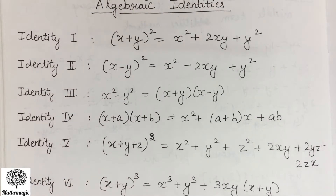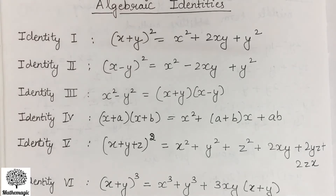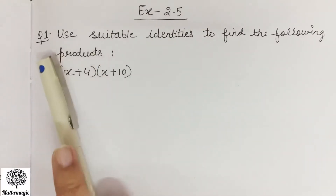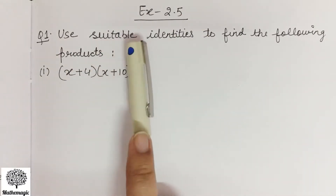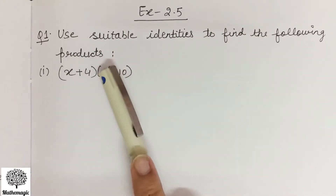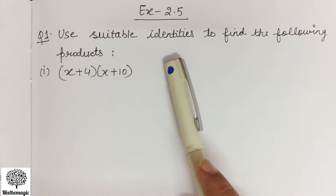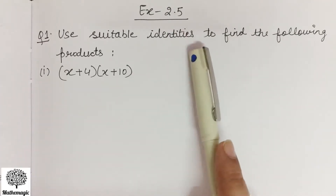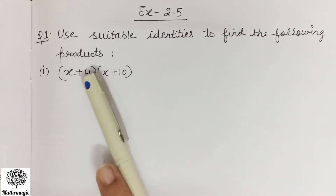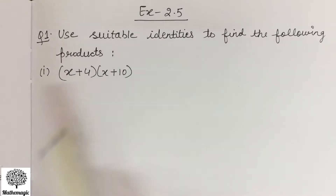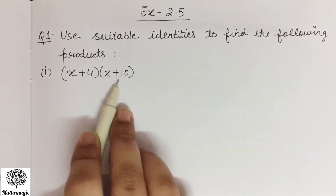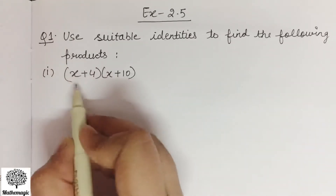Now I will start with Exercise 2.5, Question number 1: Use suitable identities to find the following products. We have to use the identities we have already studied to find the products. The first part is (x+4)(x+10).